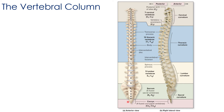The sacral and coccygeal fusions don't usually start until about age 20, and they're not complete until middle age, so many of you watching this probably still have these bones unfused. The vertebral column provides flexibility because it is not completely straight, and from the lateral perspective you can see several distinct curvatures.